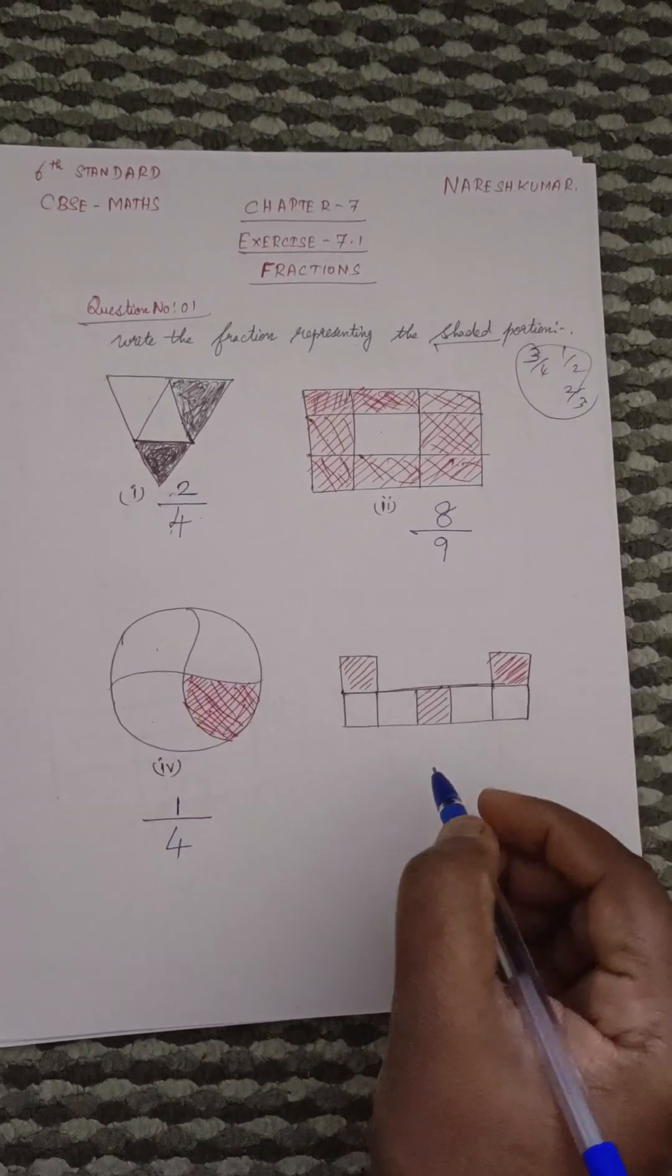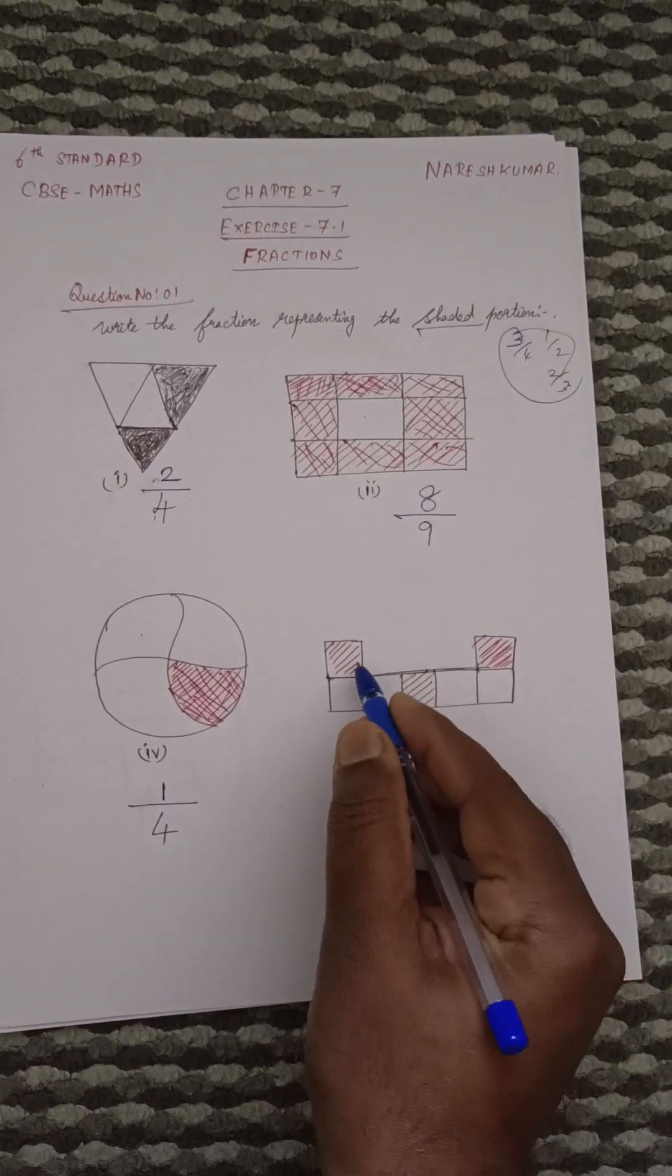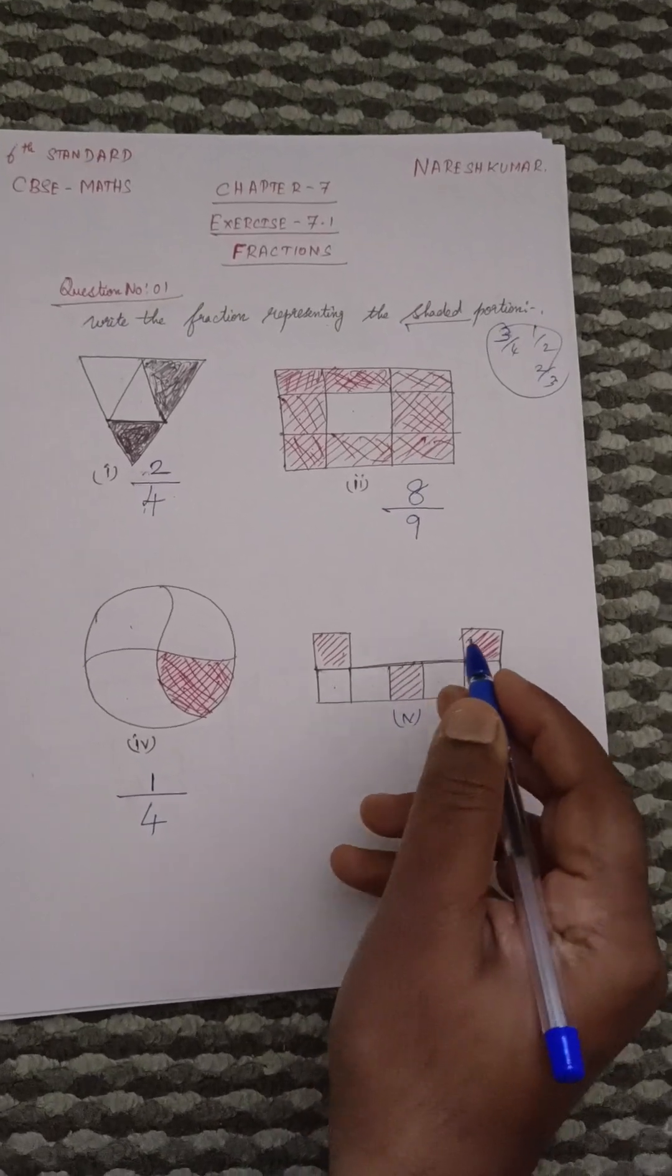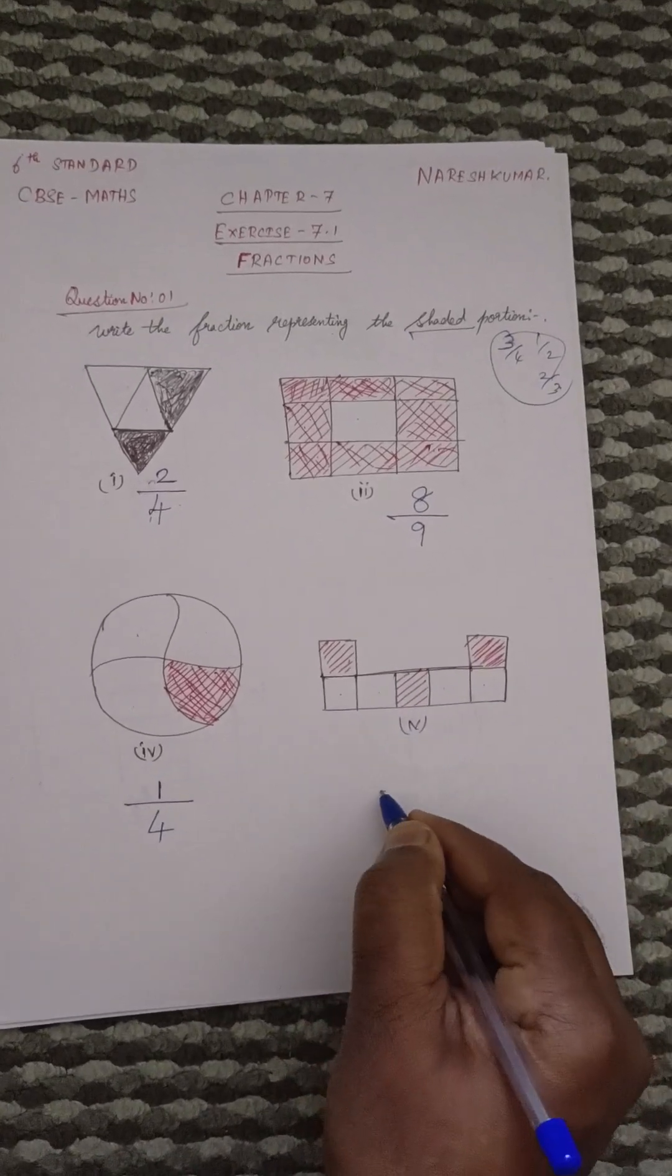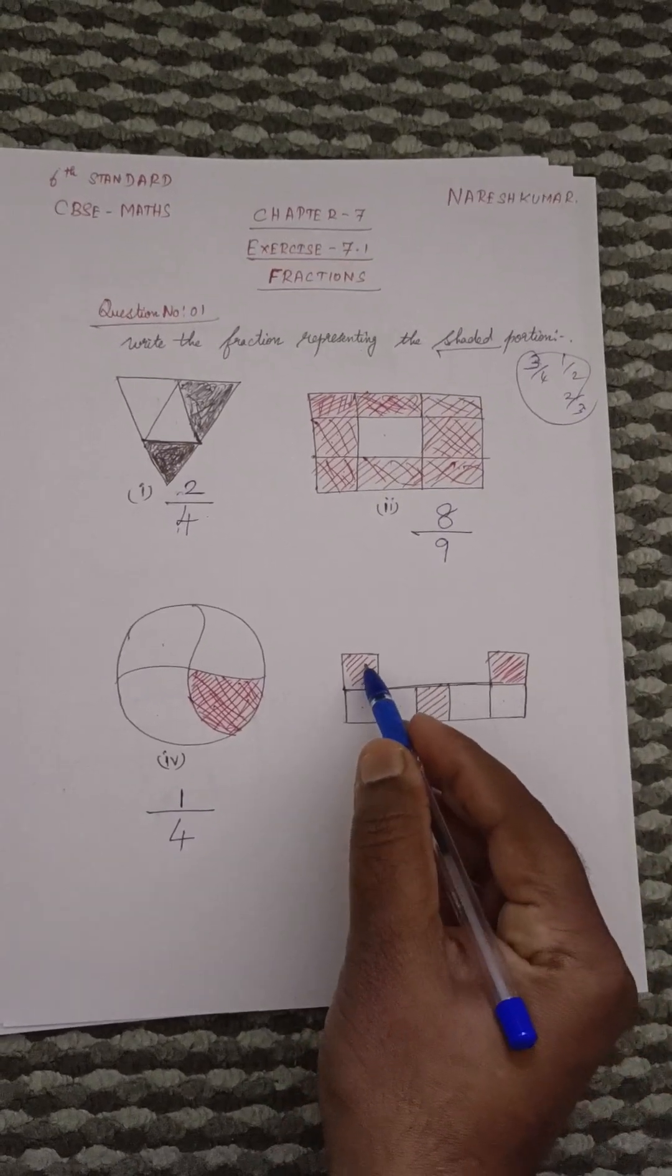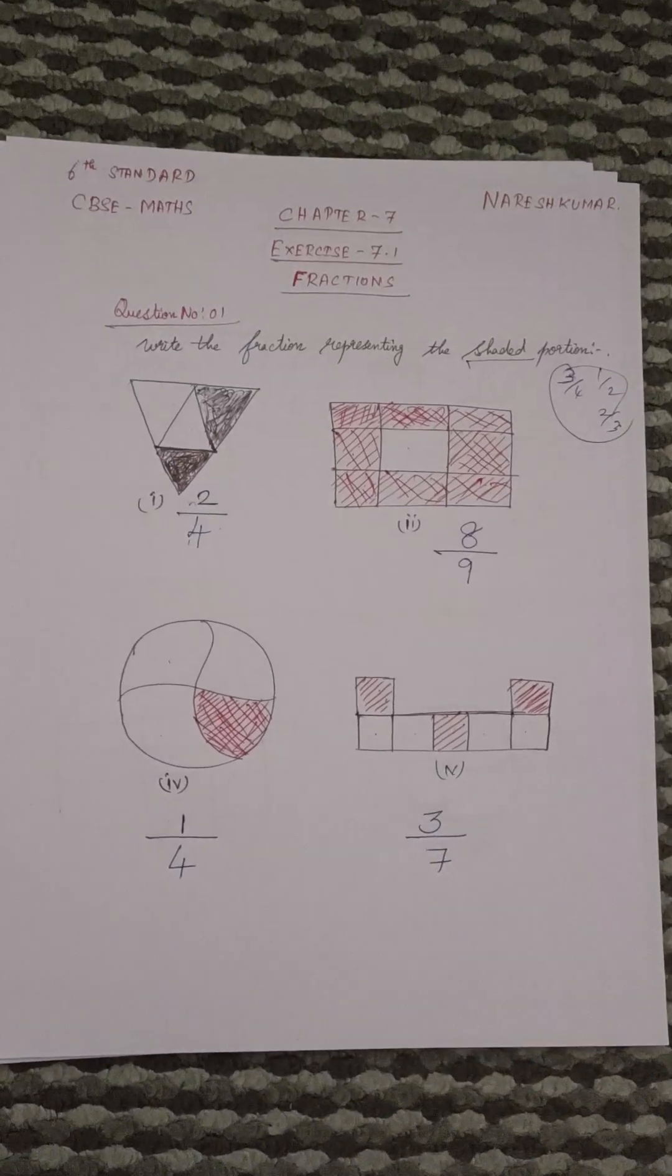Then this one, how many are there? 1, 2, 3, 4, 5, 6, 7. So they have divided into 7. Then shaded portion, how many are there? 1, 2, 3. So 3 by 7. That's all about this.